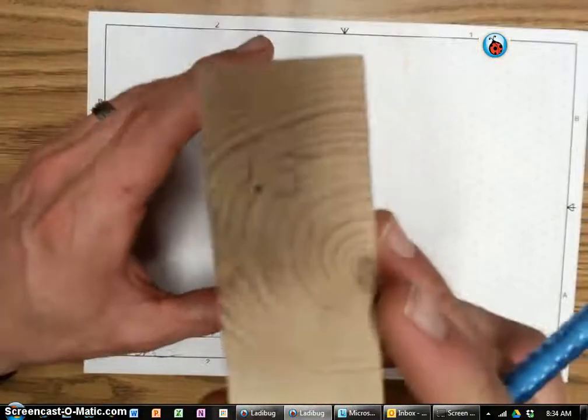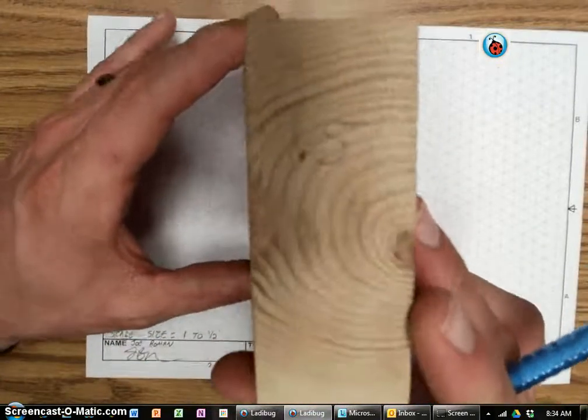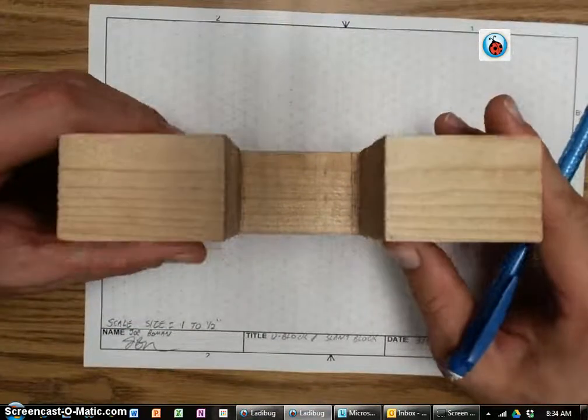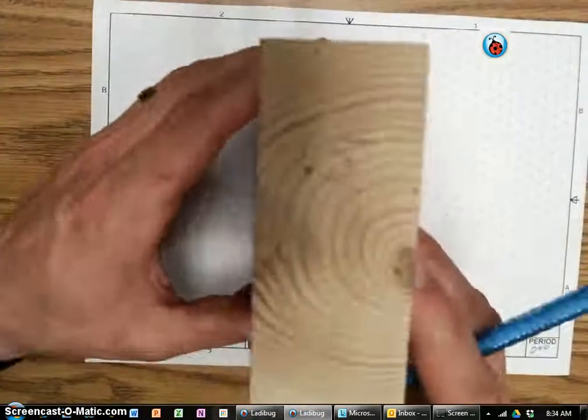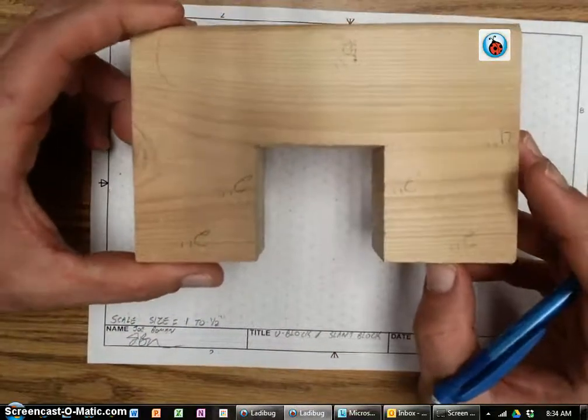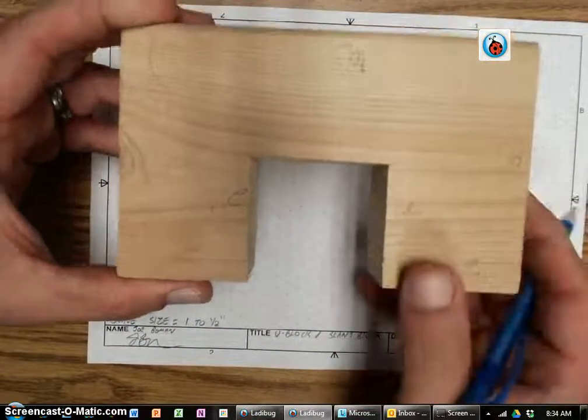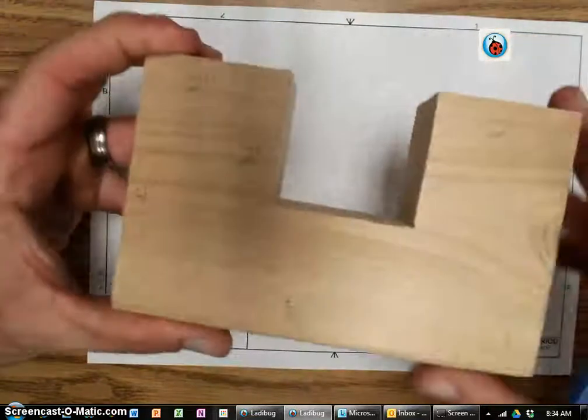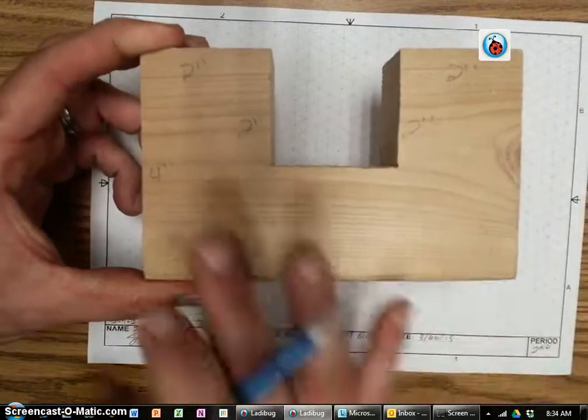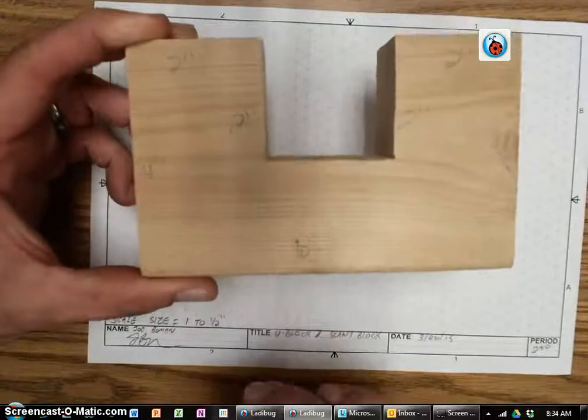So if we had to choose that correct front view to draw on the X and the Y, would we choose this one? No. What about this one? No. What about this one? No. Why wouldn't we choose this one? Because it's upside down. So we want to make sure we draw the best 2D view and that it's shown the correct way.